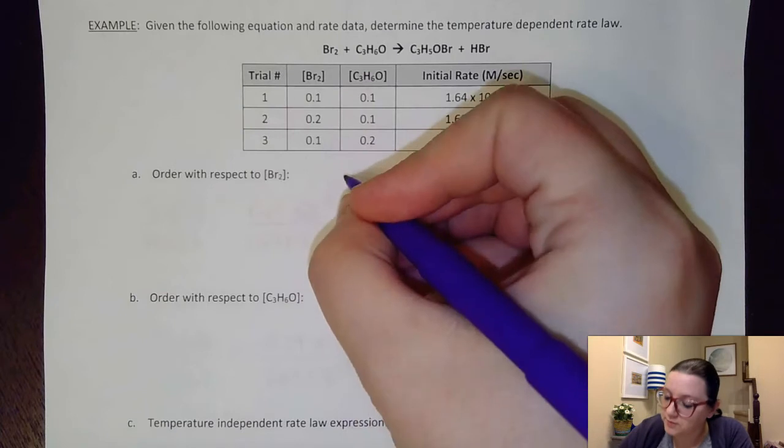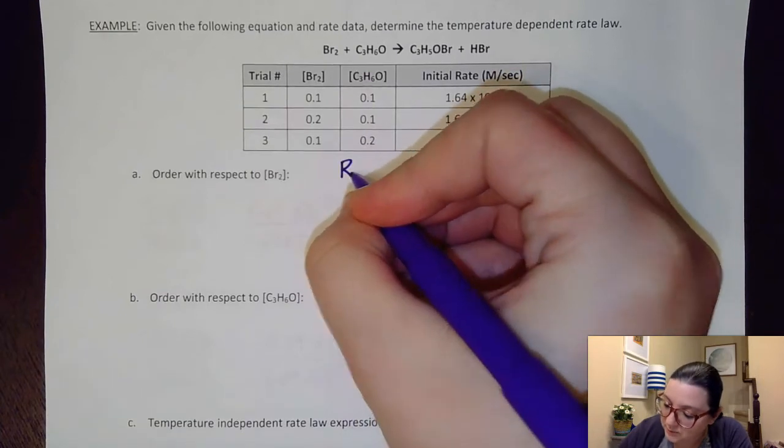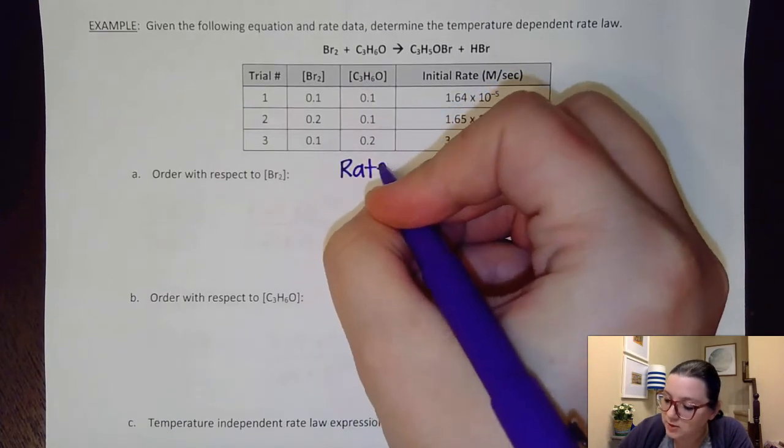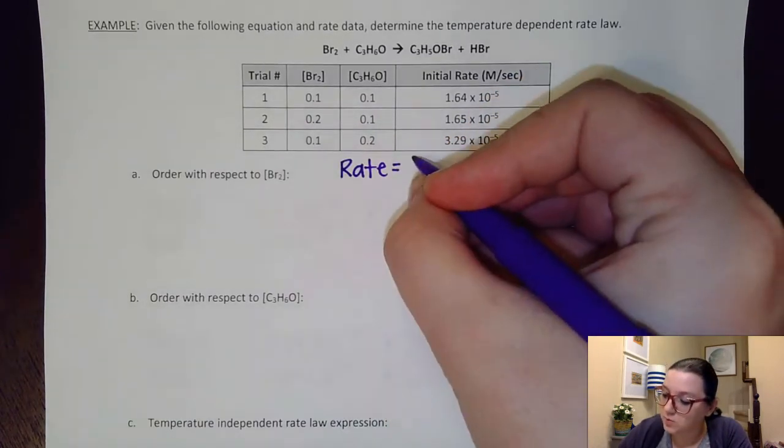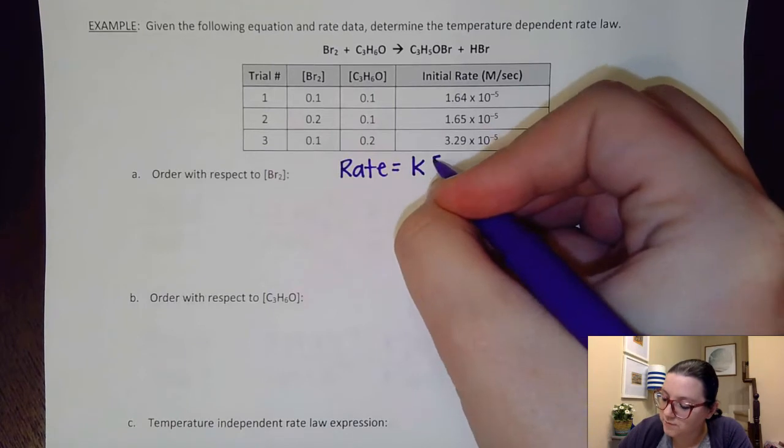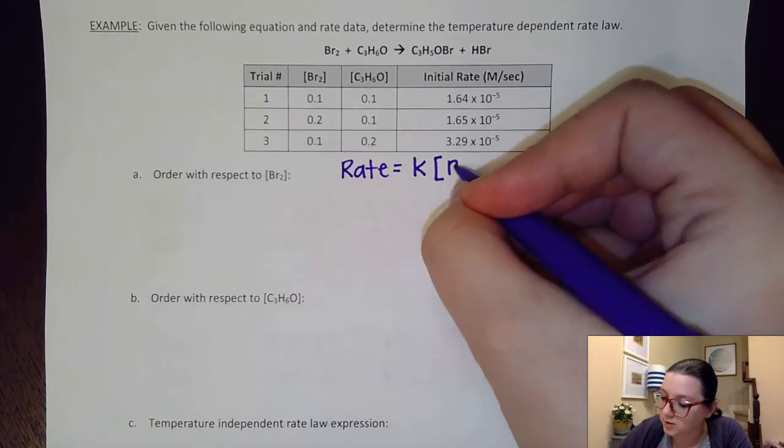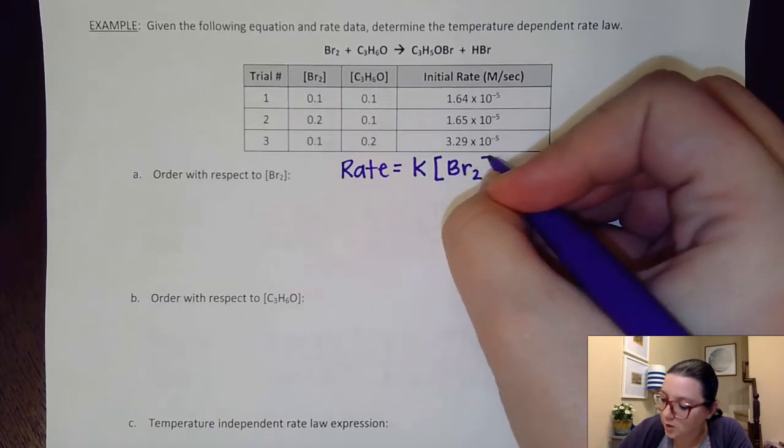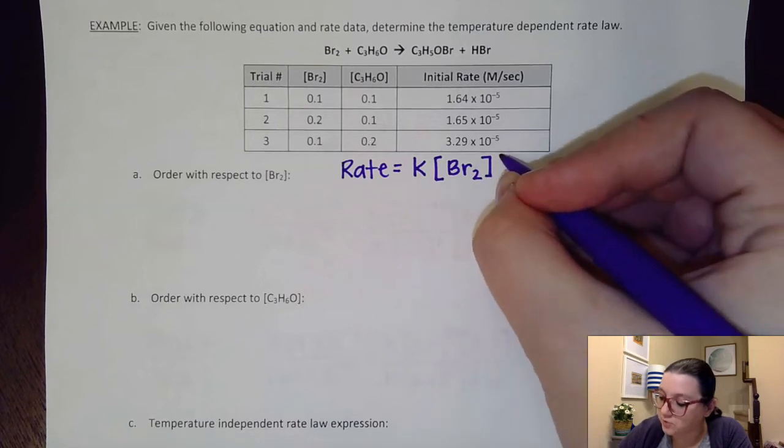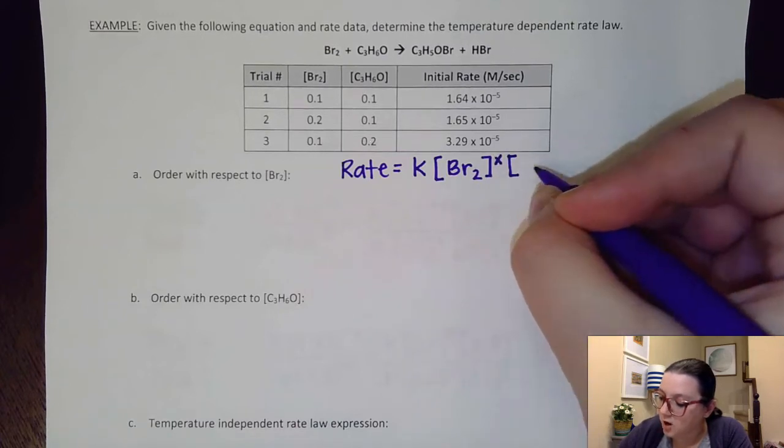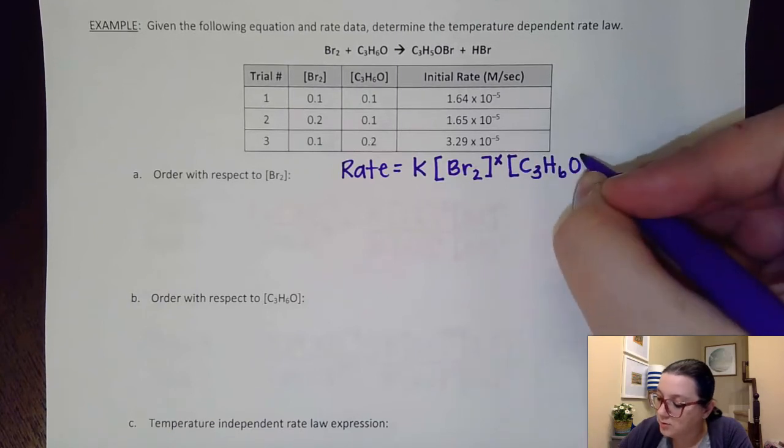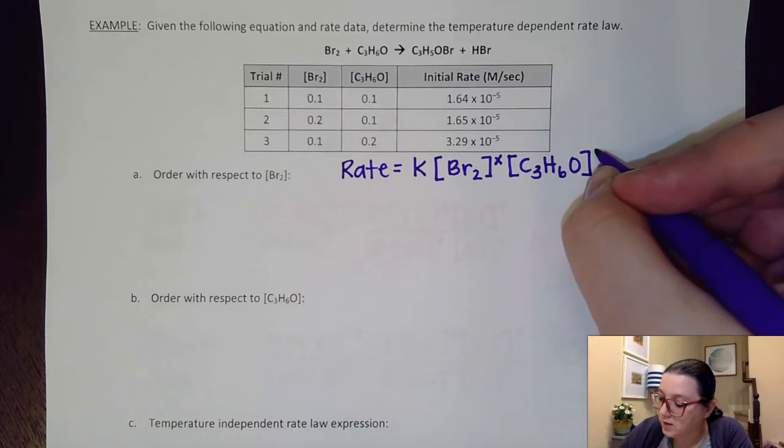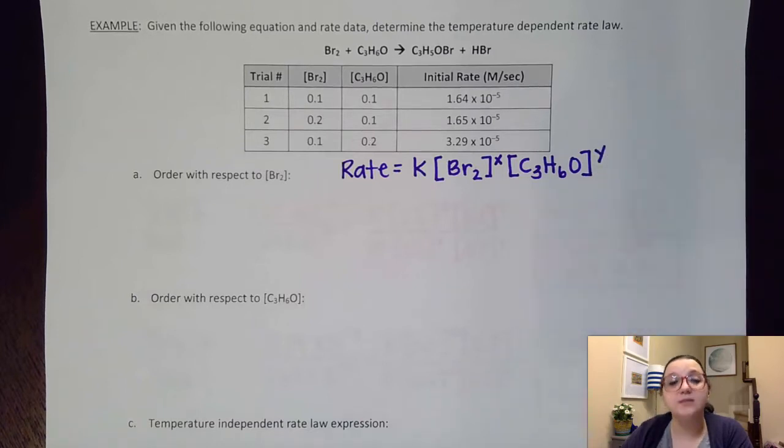And so what I'm going to do first is actually write a formula for my rate law expression. So as we remember from our previous video, rate is always equal to k, our first reactant of Br2, raised to some exponent, which for right now I'm going to put x there. And our C3H6O also raised to some exponent. This time though, we're going to put y since its order will be different than Br2's.